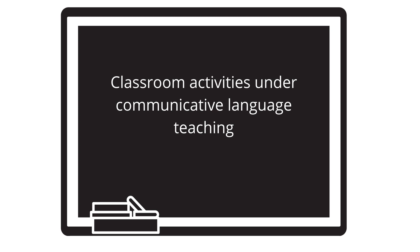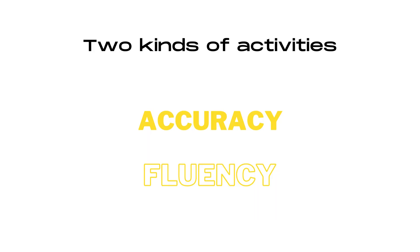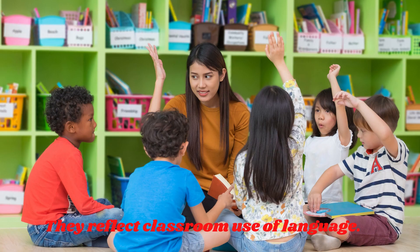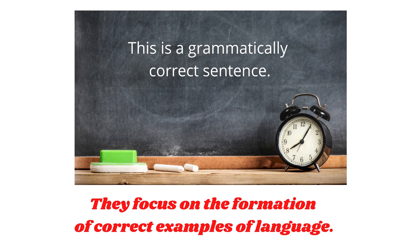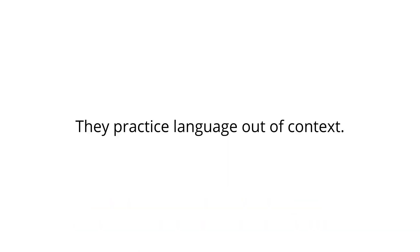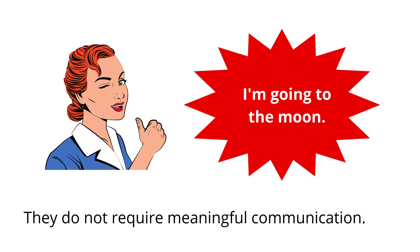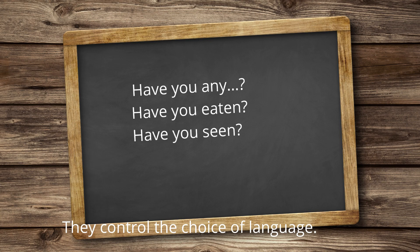Classroom activities under communicative language teaching fall into two major kinds: accuracy activities and fluency activities. According to Professor Richards, accuracy activities are characterized by the following: they reflect classroom use of language, focus on the formation of correct examples of language, practice language out of context, practice small samples of language, do not require meaningful communication, and control the choice of language.